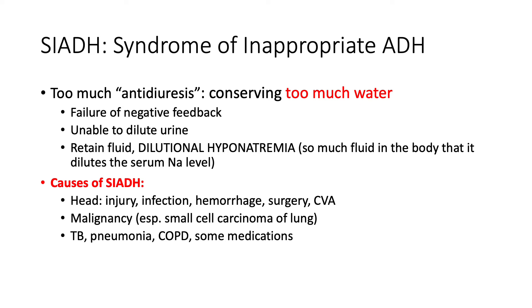What causes SIADH? Often we focus on the brain — brain tumors, malignancy — but respiratory illness can trigger SIADH as well. The bottom line is that the negative feedback loop slowing down ADH secretion is not happening. Head injuries, brain infections like brain abscesses or meningitis, hemorrhagic stroke, tuberculosis, lung cancers, pneumonia, COPD, and even certain medications such as oxytocin or antidepressants have all been shown to trigger secretion of ADH. As with diabetes insipidus, SIADH can also be idiopathic.